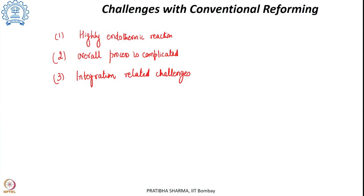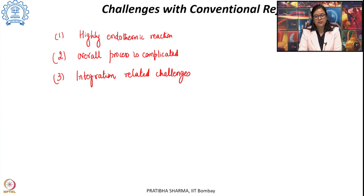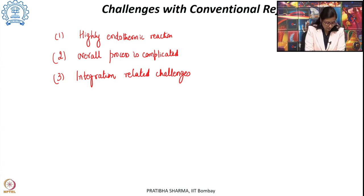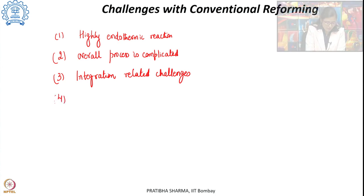With all these heat recovery units, the system becomes large and bulky. So the footprint area required for a conventional reformer is comparatively larger. At the same time, complete recovery of hydrogen after the purification step — like in pressure swing adsorption — is not possible, since the PSA off-gas or tail gas still has a certain amount of hydrogen left out.